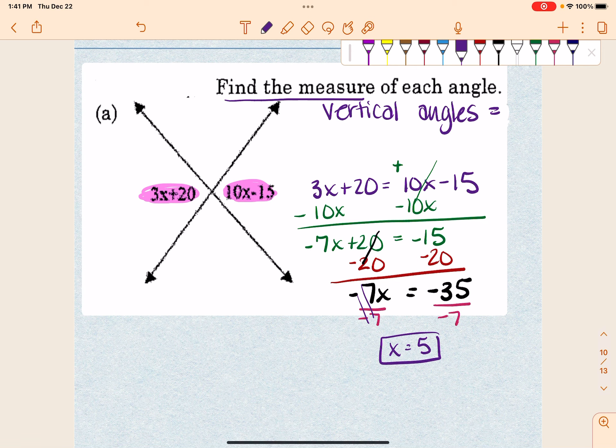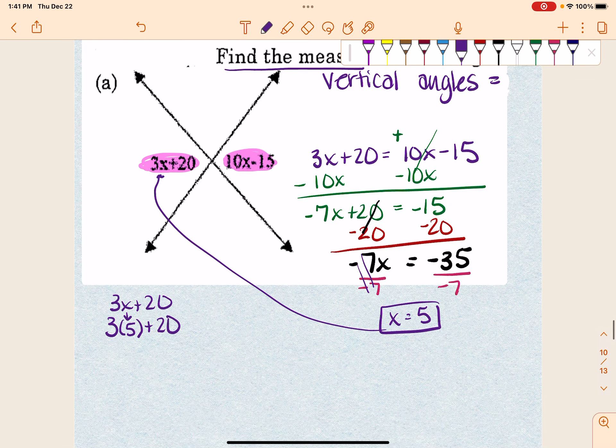So that's important to know. But now I actually have to plug this in to see what that's going to be. So if I have 3x plus 20, and I am going to take out the x, and I'm going to replace it with a 5. So if I go to do this, that means it's going to be 3 times 5, which is 15, plus 20, which is going to give me 35.